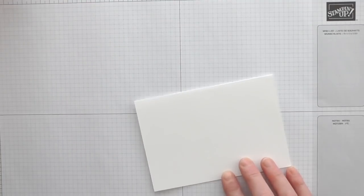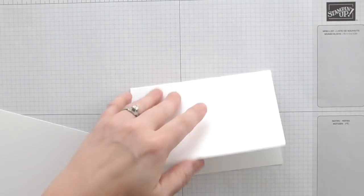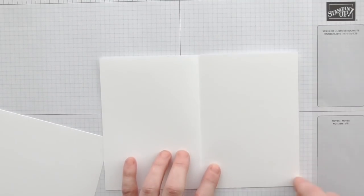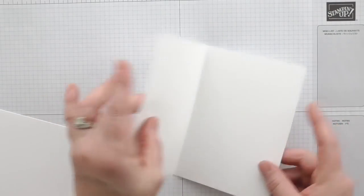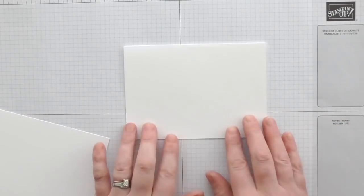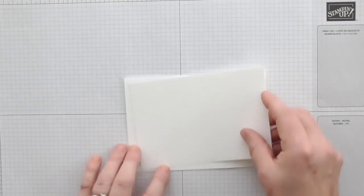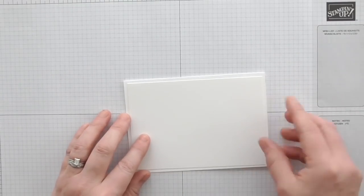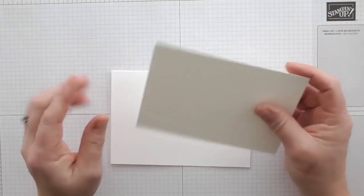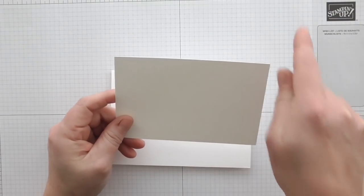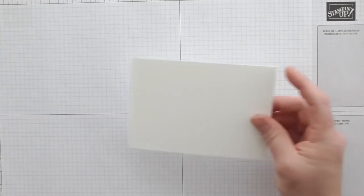So I have my card base here and this measures eight and a half by five and seven eighths, scored at four and one eighths and we fold it to make our card base and we're going to have it tenfold. And then I've got a top layer which is also whisper white and this measures five and five eighths by three and seven eighths.